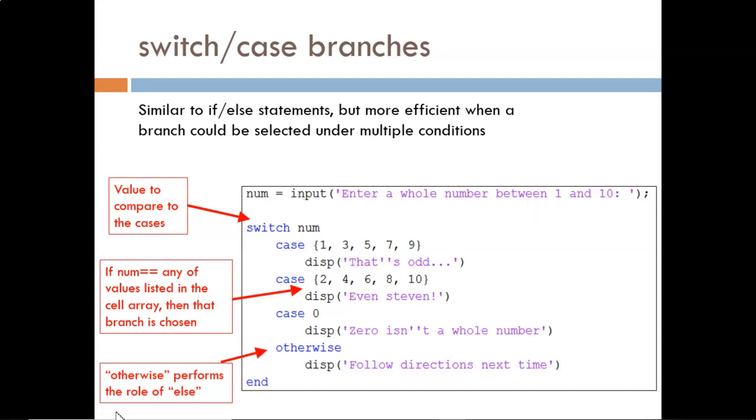So if the user inputs 7 for num, then this first branch is chosen and the sentence 'that's odd' displays. If the user inputs 4, then the second branch is selected. If the user inputs 0, then this sentence will display.